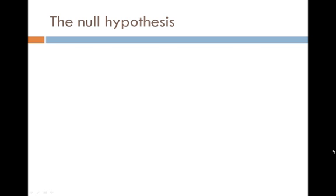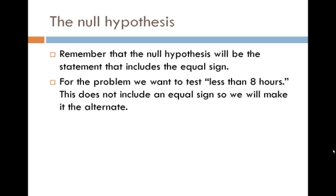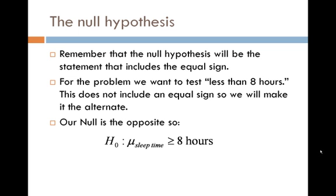Let's first start off with the null hypothesis. Remember that when you're trying to state the null hypothesis, this will be the statement that includes the equal sign. Now when we look at the problem, we want to test out less than eight hours of sleep, and that doesn't really include an equal sign, so we'll actually make that our alternate statement. For our null hypothesis, that's going to be the opposite. So our null will be that the mean sleep time is greater than or equal to eight hours, and our alternate will be that the mean sleep time is less than eight hours.